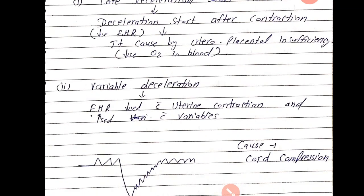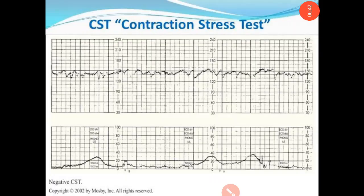The second condition is variable deceleration: fetal heart rate decreases with uterine contractions and then increases in a variable pattern. If the patient's position is changed, this condition can normalize.